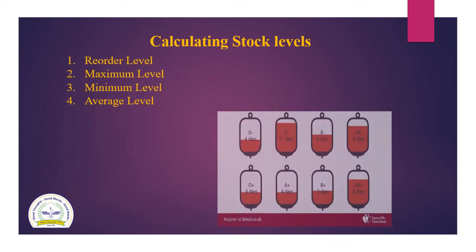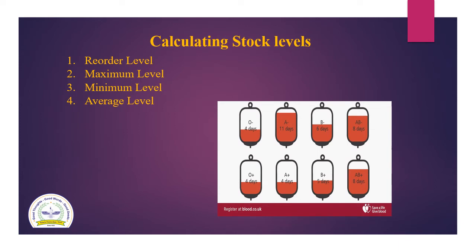As in this picture, it represents the stock levels of blood groups available in the blood bank. We can see that A negative, AB negative, and AB positive are higher in stock, whereas O negative, O positive, and A positive are amongst the lower in stock available in the blood bank. Hence, these stock levels help to ensure correct availability of the stock to be maintained.